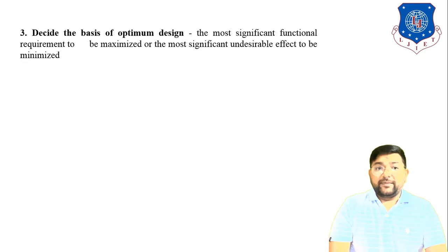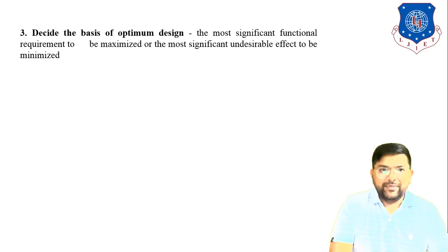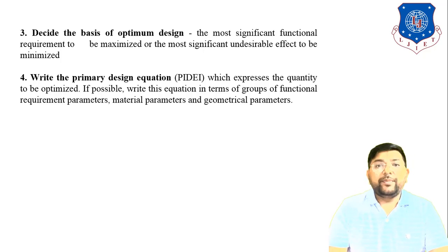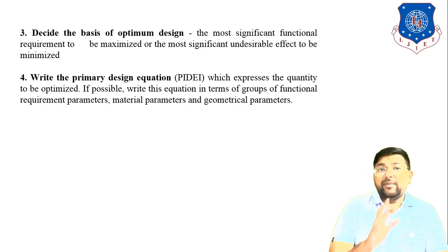Step three: decide the basis of optimum design — determine the most significant functional requirement to be maximized or the most significant undesirable effect to be minimized. Step four: write the primary design equation (PDE), which expresses the quantity to be optimized. If possible, write this equation in terms of groups of functional requirement parameter, material parameter, and geometric parameter.